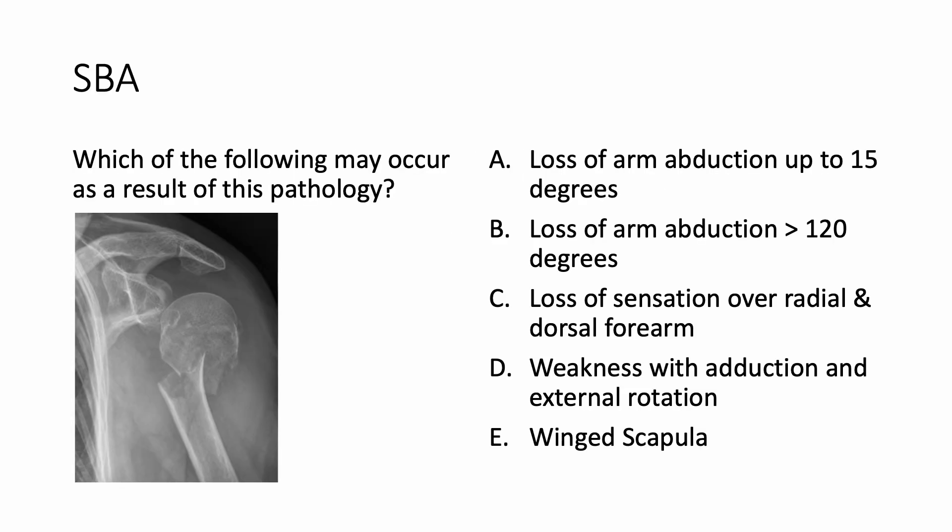Stay tuned till the end. Which of the following may occur as a result of this pathology? Option A: loss of arm abduction up to 15 degrees. Option B: loss of arm abduction beyond 120 degrees. Option C: loss of sensation over radial and dorsal forearm. Option D: weakness with adduction and external rotation. Option E: winged scapula.